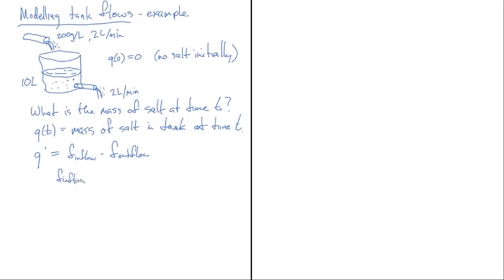F_inflow should have units of mass per unit time — mass per minute — to balance the left-hand side, so grams per minute. That consists of two pieces: an inflow rate in liters per minute and a concentration in grams per liter. In a given minute, two liters of solution come in, so I multiply concentration by that volume. I've taken concentration and multiplied it by the rate of inflow to get the overall inflow rate.